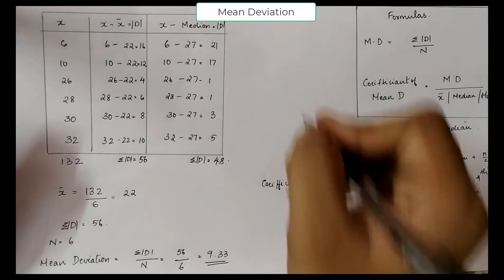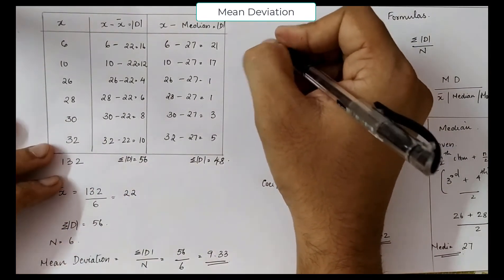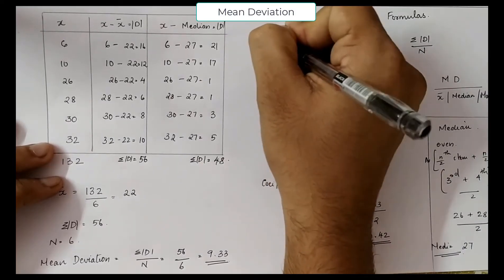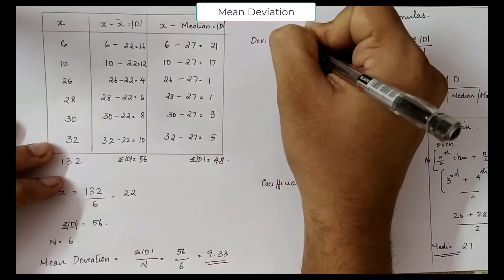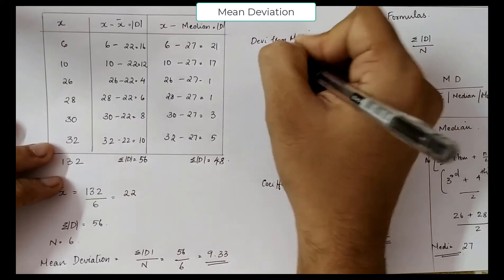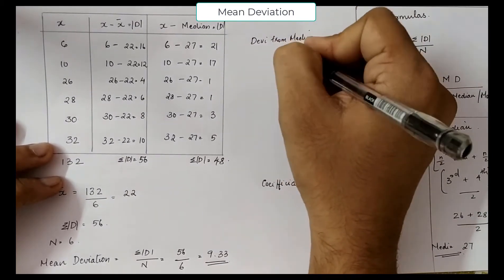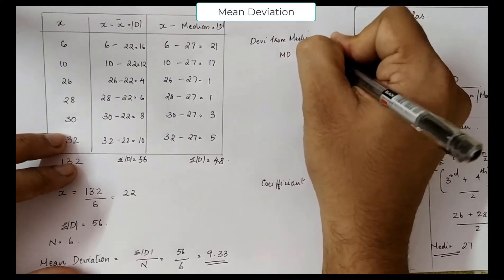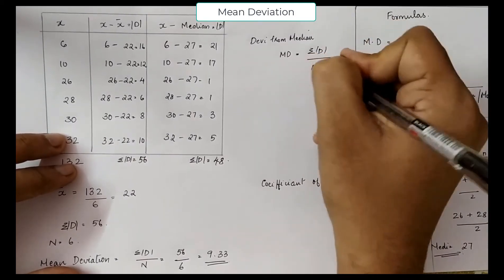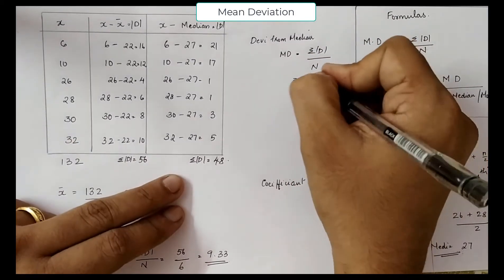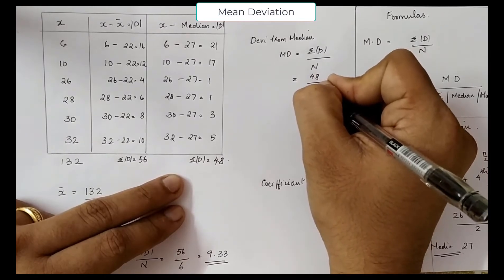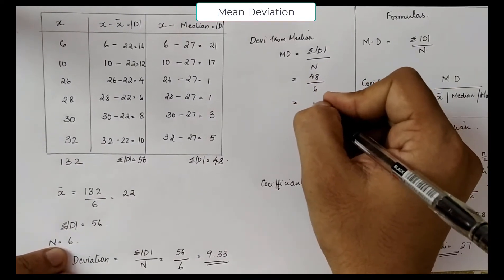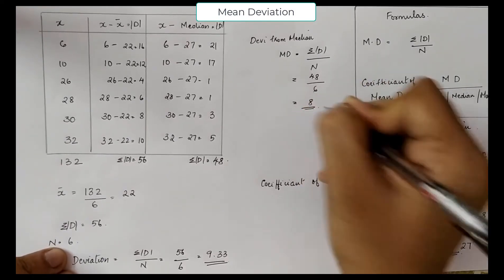Now let us calculate the deviation from median. Mean deviation from median is equal to sigma D divided by N. Sigma D is 48, N is 6, so 48 divided by 6 is equal to 8.